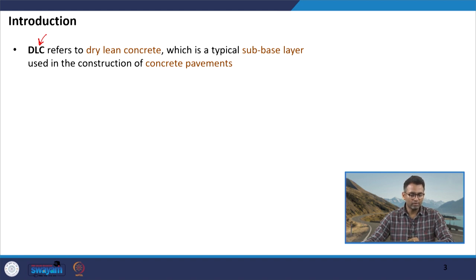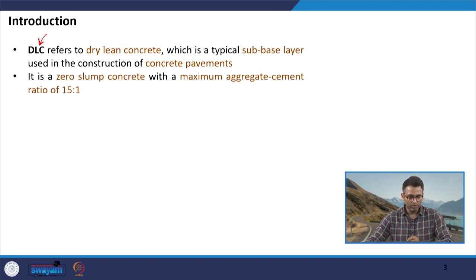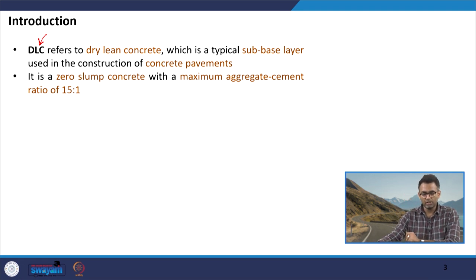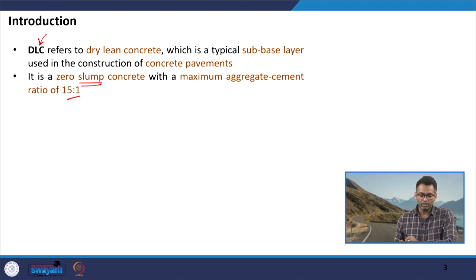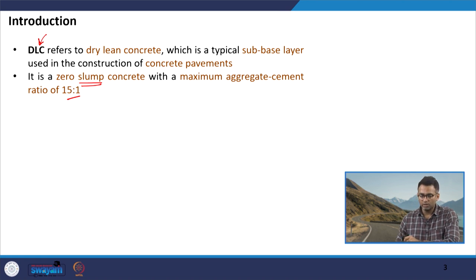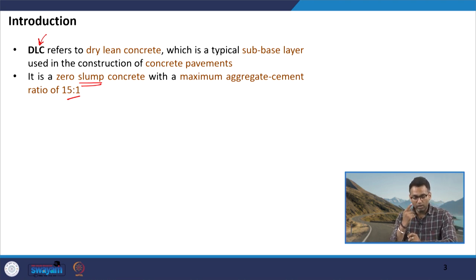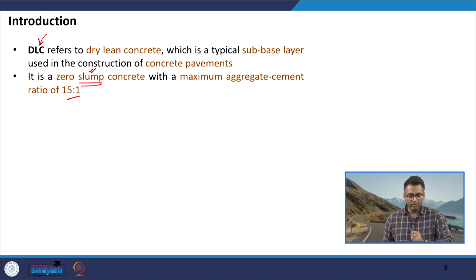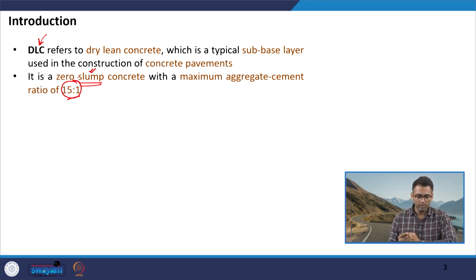Dry lean concrete is a low strength concrete mixture in comparison to pavement quality concrete. It is a zero slump concrete — a very dry mix — with a maximum aggregate-to-cement ratio of 15 to 1. This is something different from what we discussed in case of PQC, where we talked about the water-to-cementitious material ratio.